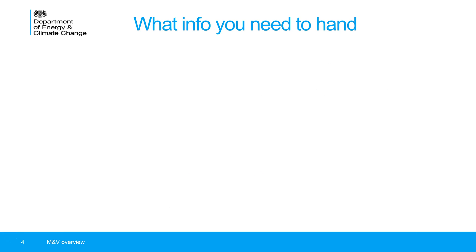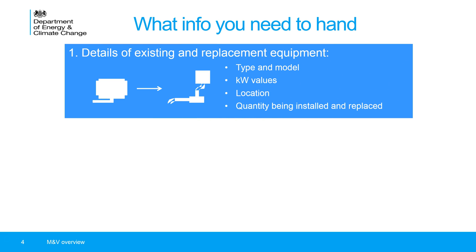In terms of the information you need to hand to fill in your documents, there are three things. First, you'll need the details of your existing and replacement equipment in your project — that includes the type and model, the kilowatt values, and the location and quantity being installed and replaced.